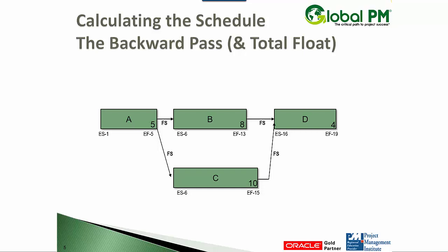Let's start with D. If we're shooting for day 19, the latest it can finish is day 19. The latest it can start would be day 16. And the formula, just so you'll know, is late finish minus the duration plus one gives you the late start. So 19 minus four plus one is 16.